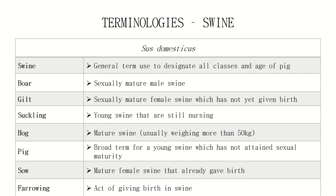Next is swine, or Sus domesticus. Swine is the general term used to designate all classes and ages of pig. Boar is the sexually mature male swine — the 'bulugan.' Gilt is a sexually mature female which has not yet given birth — this is the 'dumalaga.' Suckling is a young swine that is still nursing, meaning it has not yet been weaned. Hog is a mature swine usually weighing more than 50 kilograms. Pig is a broad term for a young swine which has not yet sexually matured. Sow is the female swine that has already given birth — our 'inahin.' And farrowing is the term for the act of giving birth in swine.